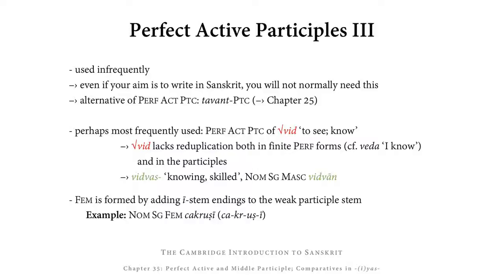The feminine of these perfect active participles is formed by adding E to the weak participle stem. So we have CHAKR, the weak perfect stem, plus USH, the form the weak suffix takes in front of a vowel, then E, giving long-E stem or long-I stem endings. So we have CHAKRUSHI for the nominative singular, CHAKRUSHI for the vocative, CHAKRUSHIM for the accusative, and so on.